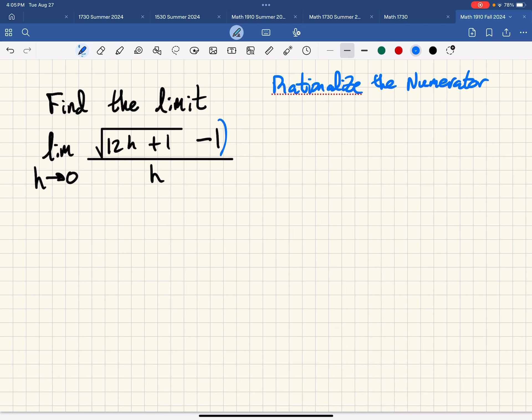So in other words we will multiply the top and bottom by the square root of 12h plus 1 plus 1. Anything we do on the top we have to do on the bottom. So square root of 12h plus 1 plus 1.